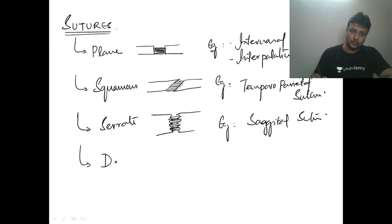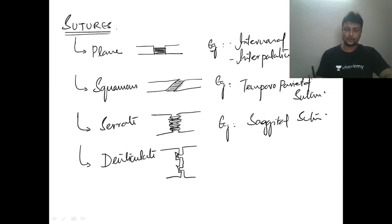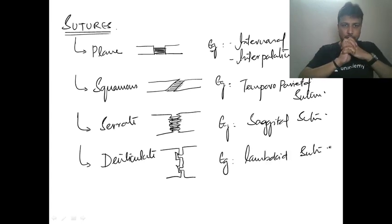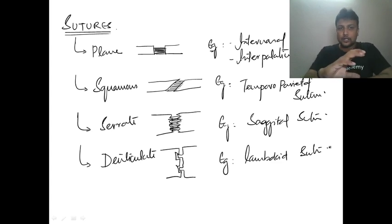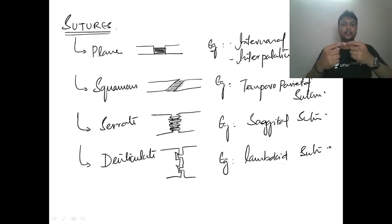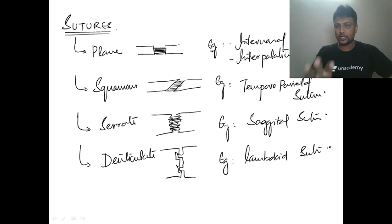The fourth type is the denticulate suture. In this suture, one bone has dentations and the other bone fits into those dentations, joined by fibrous tissue. To summarize: plain suture — straight margins; squamous — overlapping; serrate — serrated ends; denticulate — interlocking dentations.